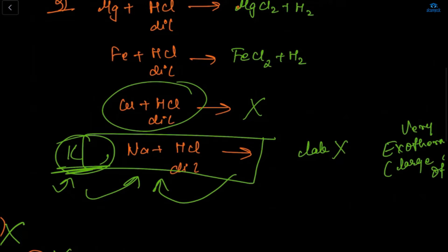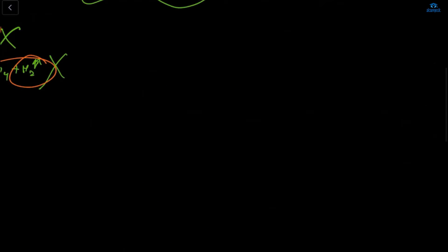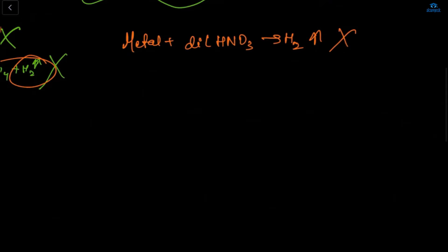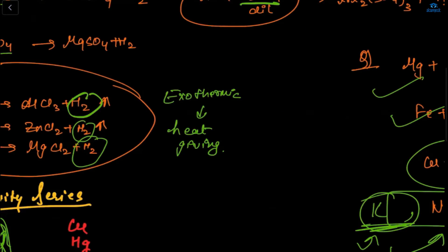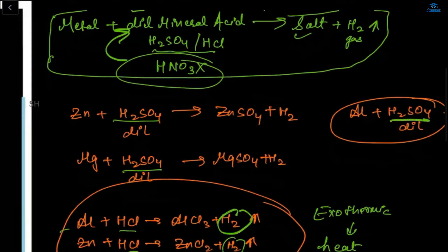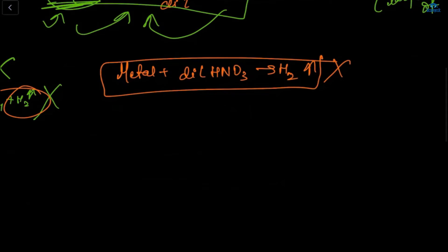Below hydrogen, metals will not liberate H₂. The reaction metal plus dilute HNO₃ giving hydrogen is a wrong reaction — only H₂SO₄ and HCl are the correct dilute mineral acids. HNO₃ is not correct.